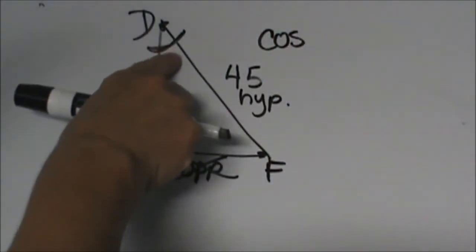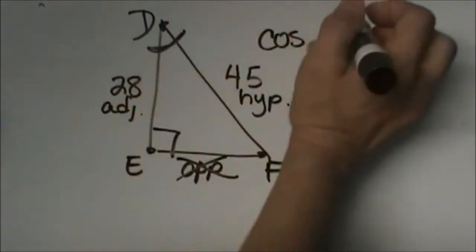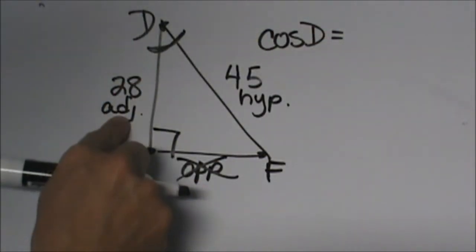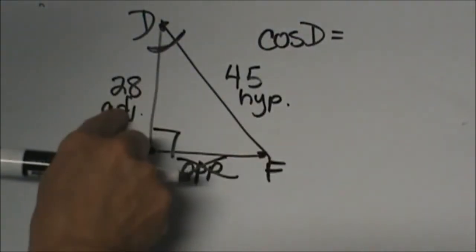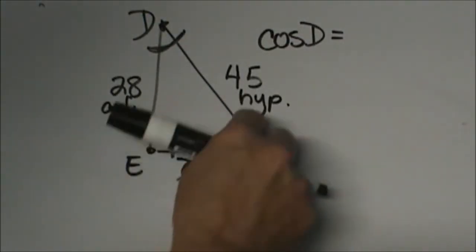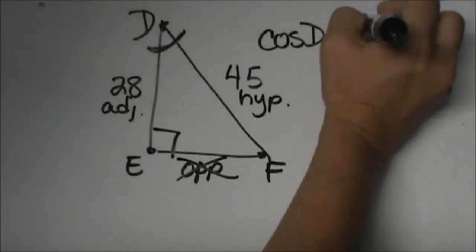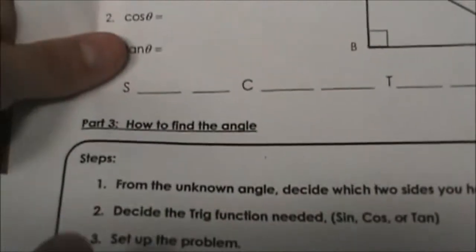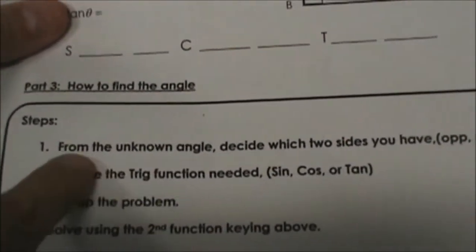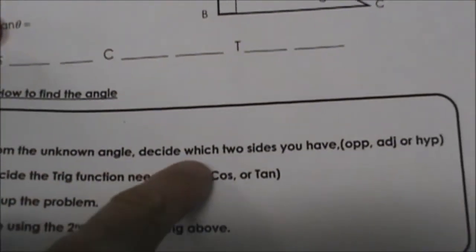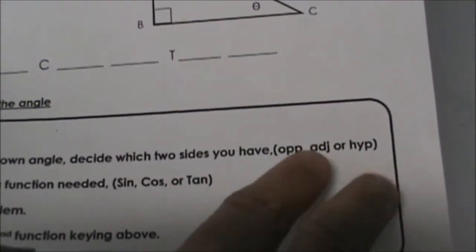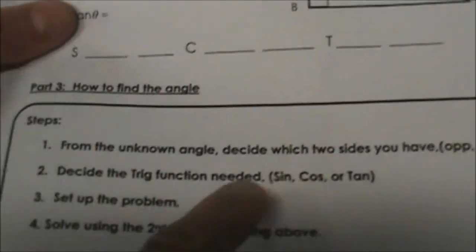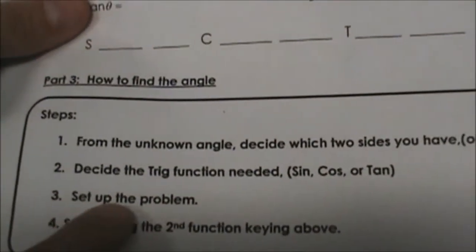The cosine of what angle? We don't know the angle measure, so cosine of D equals adjacent over hypotenuse. I'm going to put 28 over 45. There's my first two steps. Let's review: from the unknown angle D, we decided which two sides we had - adjacent and hypotenuse - so we're using the cosine function. Then we set it up.